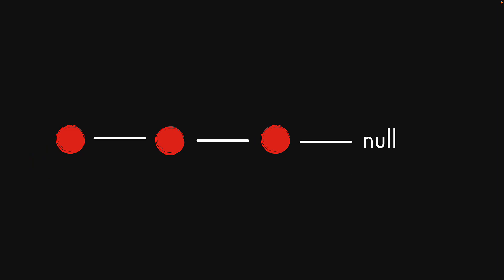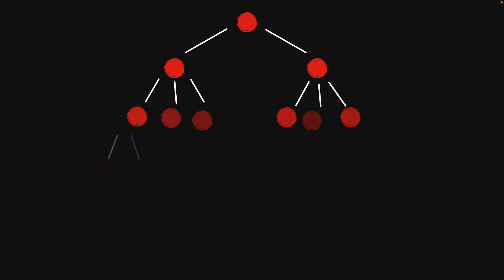So by this definition, the linked list data structure that we looked at is a graph. Now a tree data structure is just a specialization of the graph with a few restrictions. And you could argue that the linked list data structure is a tree as well. But let's look at a more general representation of what people imagine when they think of a tree. Fundamentally, the restrictions we impose on a graph for it to be considered a tree is that it must not contain any cycles.